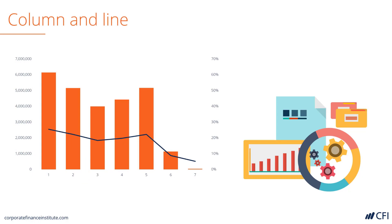Let's look at some combination charts. A great combination is to take a column chart and a line chart. What you can do is show, for example, on the left axis the dollars of revenue in a month, and on the right axis the net profit margin. The dollars of revenue would be the orange bars and the net profit margin would be the blue line. By combining the two charts we can see the relationship between the two — it seems to make sense that as revenue declines, so does the net profit margin. A column and line chart combo works best when you're showing two different types of units, such as dollars on one axis and percentages on the other.